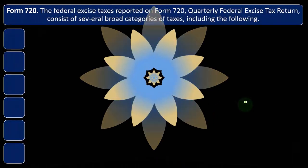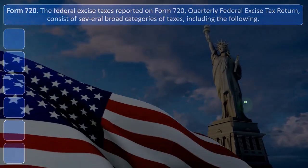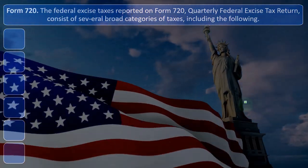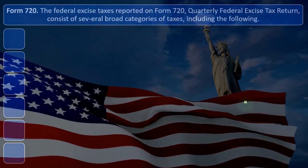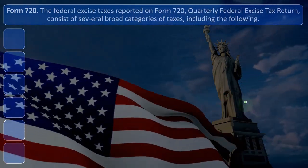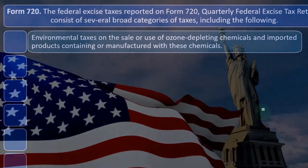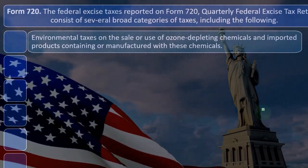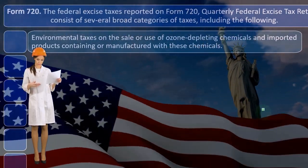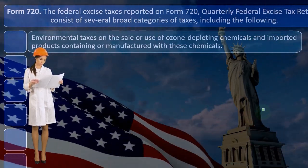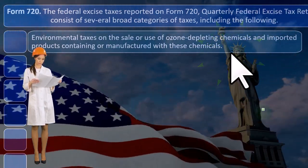The federal excise taxes reported on Form 720 — the Quarterly Federal Excise Tax Return — consist of several broad categories of taxes. These include environmental taxes on the sale or use of ozone-depleting chemicals and imported products containing or manufactured with these chemicals.